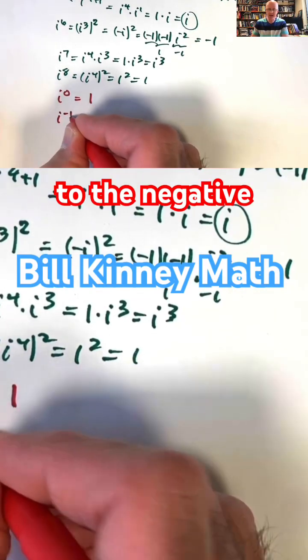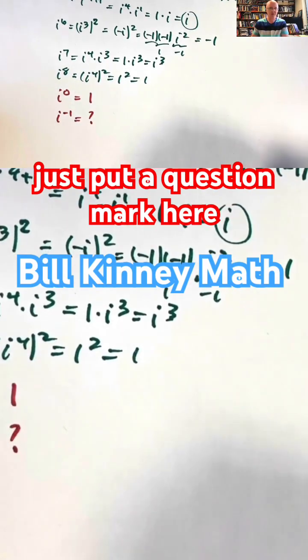Negative powers of i, like i to the negative 1. What should that be? I'll just put a question mark here initially.